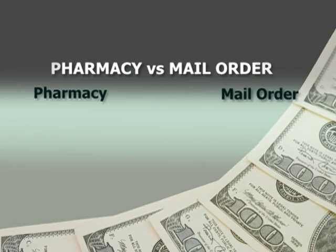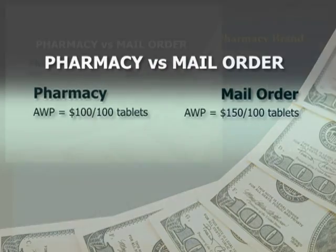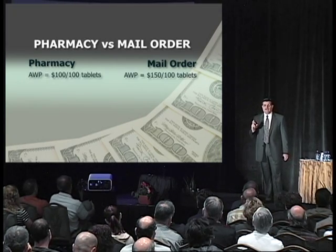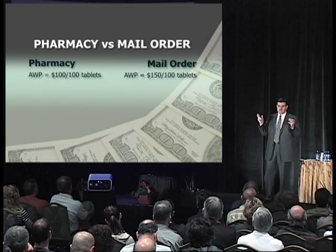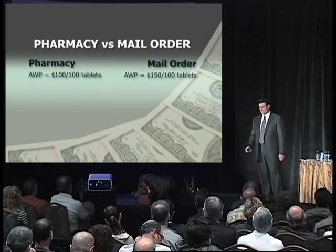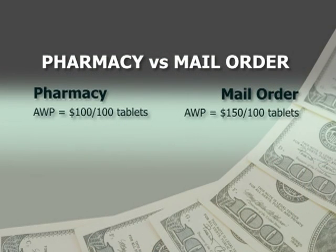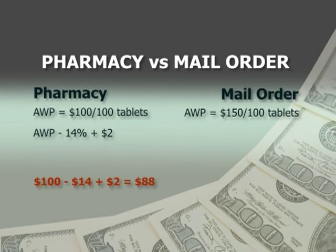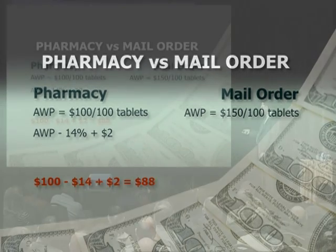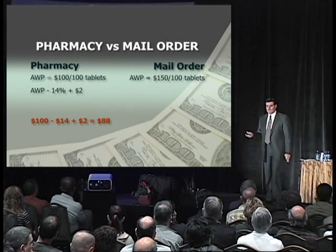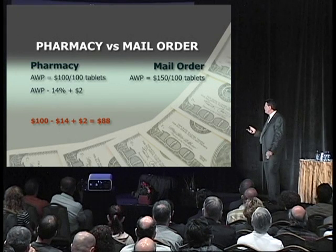I'll switch over to brand name to keep the math simple. A 100-tablet bottle of this drug has an AWP of $100 — a dollar a tablet — which makes the math simple. If you're at a rate of AWP minus 14% plus a $2 fee: 14% of $100 is $14, so $100 minus $14 plus a $2 dispensing fee means the pharmacy is paid a total of $88 for that prescription. Some is co-pay from the patient, some is the company's portion, but the pharmacy gets $88 total.